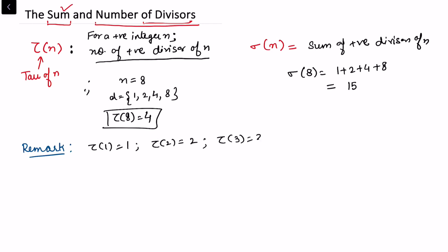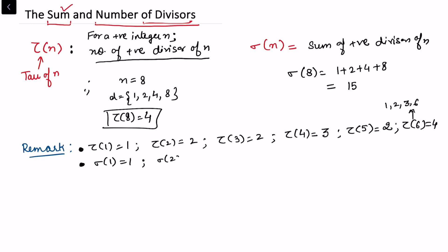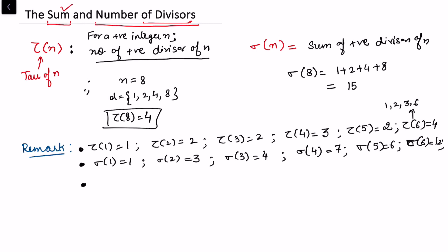tau(3) = 2, tau(4) = 3 since divisors of 4 are 1, 2, and 4. tau(5) = 2 since 5 is prime, and tau(6) = 4 since 6 has divisors 1, 2, 3, and 6. Similarly: sigma(1)=1, sigma(2)=3, sigma(3)=4, sigma(4)=7, sigma(5)=6, and sigma(6)=12.